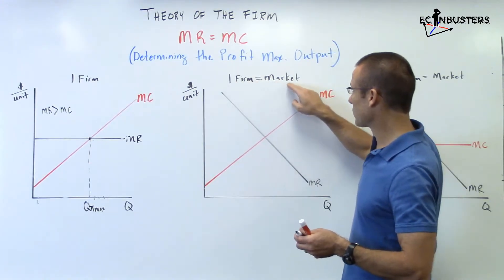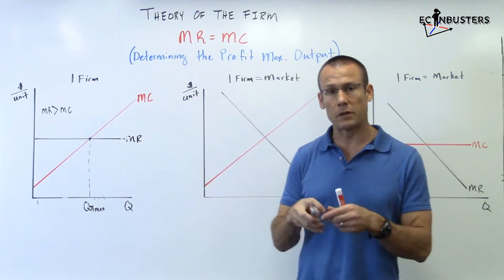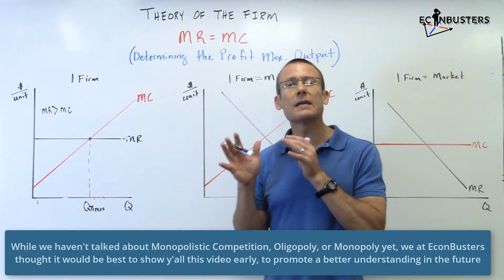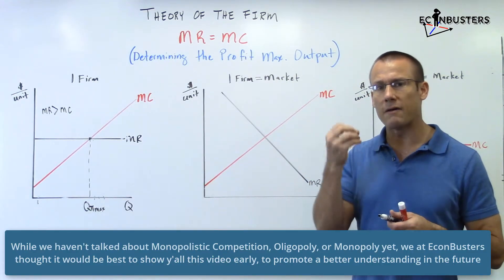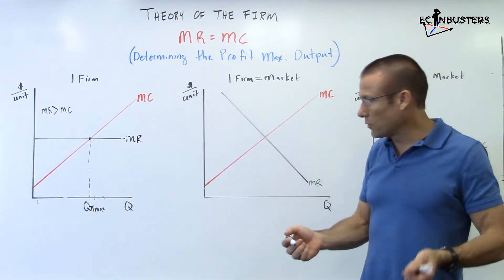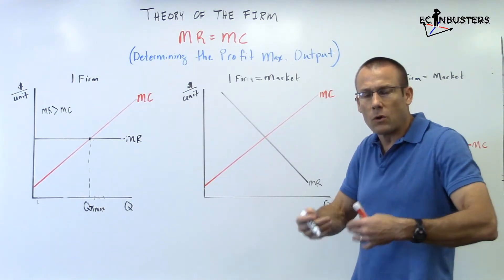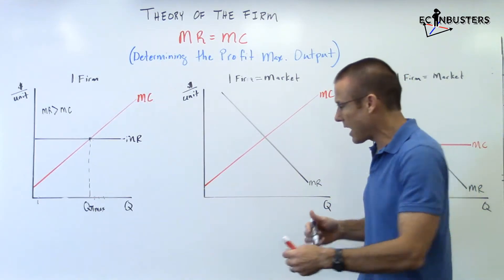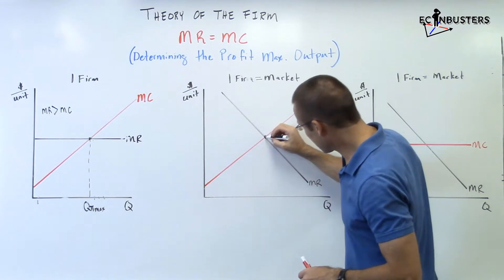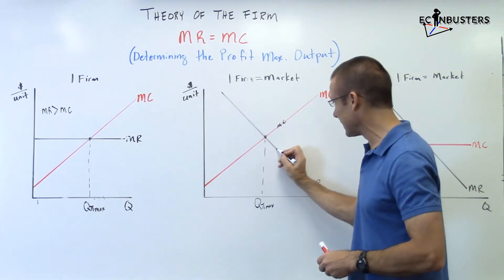Now over here: one firm equals the market. We see an MR that's downward sloping, which means demand must be downward sloping. Since demand is downward sloping, we're now talking about monopolistically competitive firms, monopoly, or oligopoly — anything other than perfect competition. We're talking about situations where we have market power. MR downward sloping, MC upward sloping. MR is exceeding MC for all these levels of output, stopping right at Q profit max. Past that level of output, MC exceeds MR.